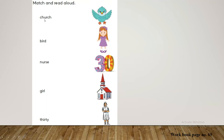In your right hand side there are some pictures. In your left hand side there are some words. Let's read the words first. Church — C-H-U-R-C-H. Bird — B-I-R-D. Nurse — N-U-R-S-E. Girl — G-I-R-L. Thirty — T-H-I-R-T-Y. That is 30.